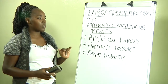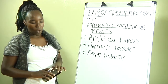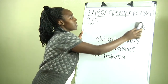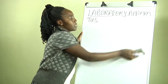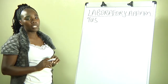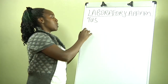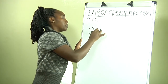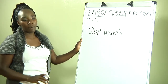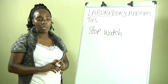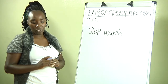We also have another apparatus used to take the time in the lab — the time taken by reactions. When chemical reactions are taking place in the laboratory, we need something called a stopwatch. A stopwatch is another very important apparatus used in the lab to take the time used by a chemical reaction to take place.